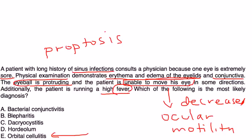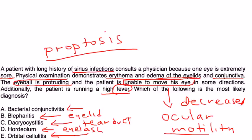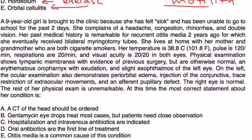Why not the other answer choices? Bacterial conjunctivitis will not produce proptosis. Blepharitis is inflammation of the eyelid and would not produce these severe symptoms. Dacryocystitis is inflammation of the tear duct. A hordeolum involves the eyelash follicle. None of these would present with such severe physical exam findings like proptosis and restricted eye movements.